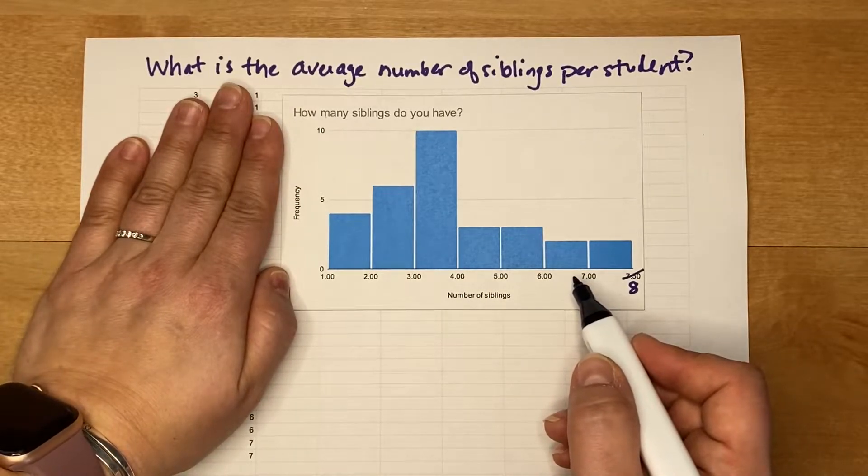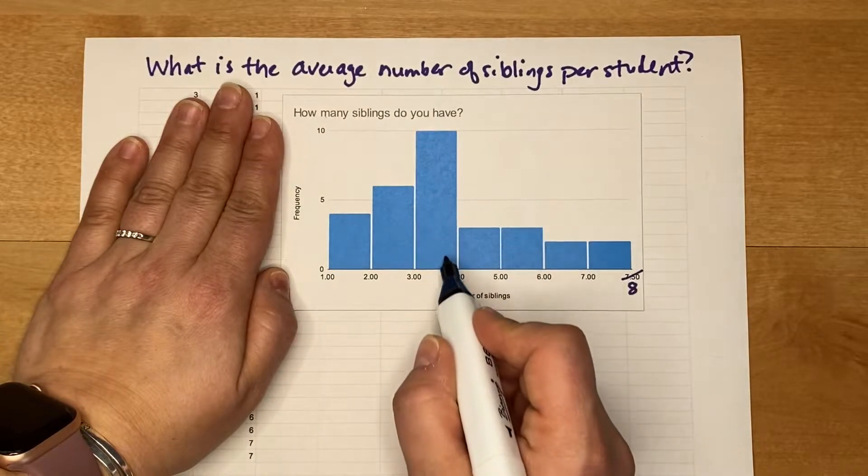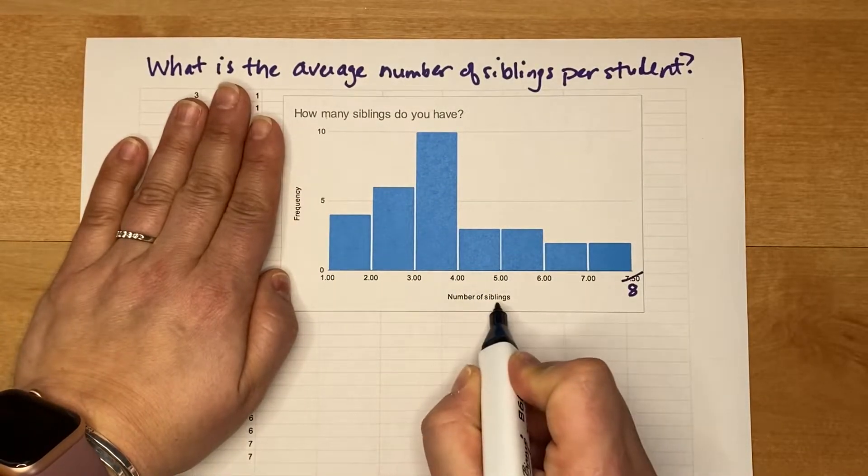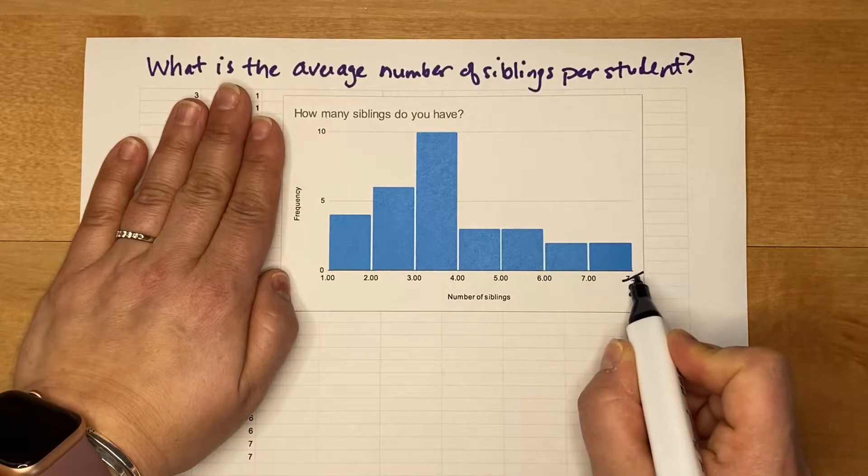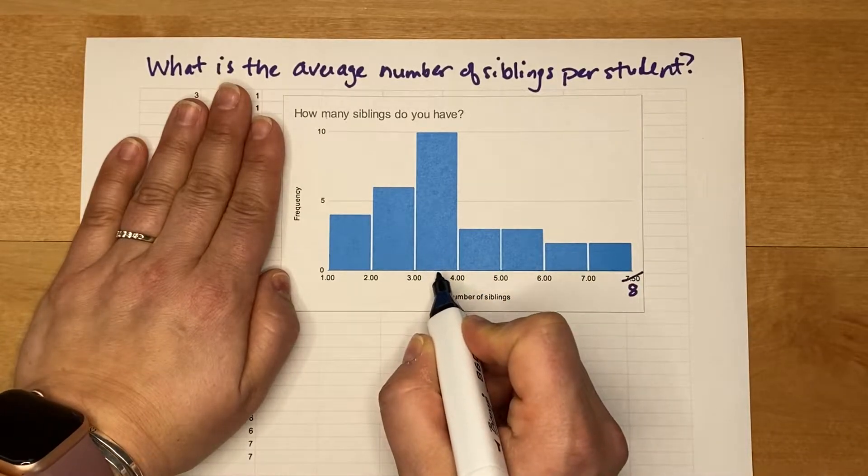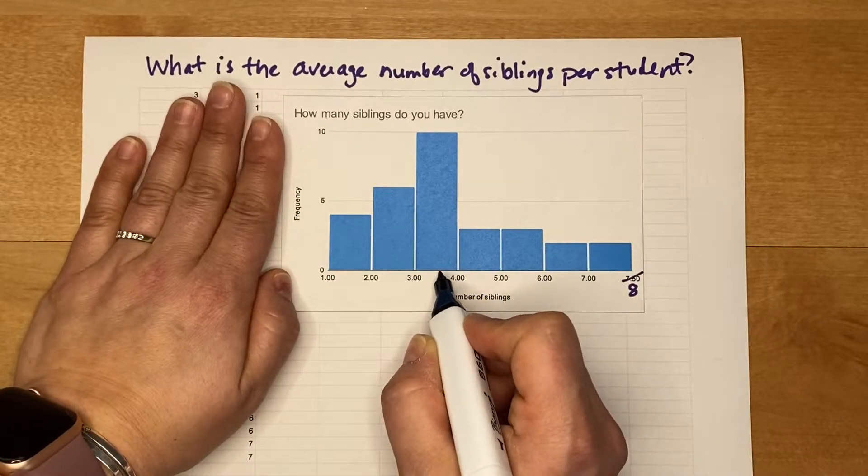You could kind of estimate what an answer might be. You could look for the mode and say well, number of siblings ranges from 1 to almost 8, so 3 might be an answer. But we can be more specific than that.